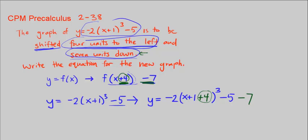So then let's just simplify this. So we get y = -2 times, well, what is x+1+4? That's just (x+5)³ minus 5 minus 7. Add those scalars minus 12.